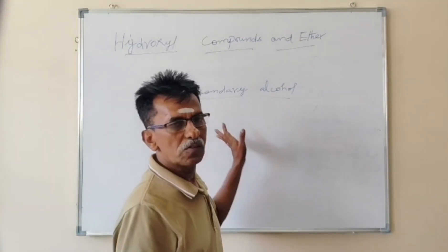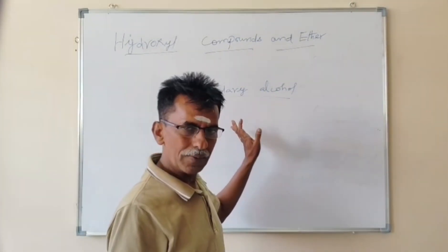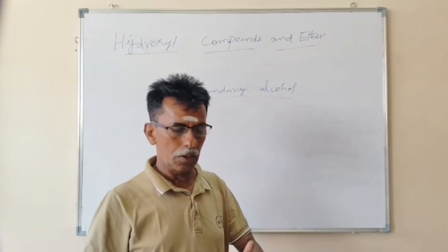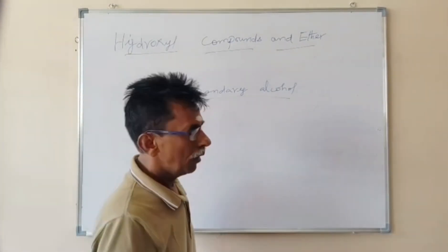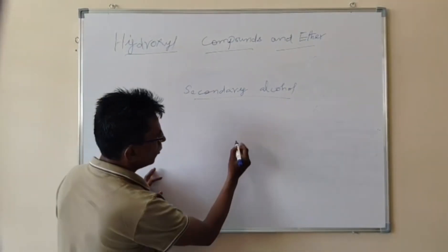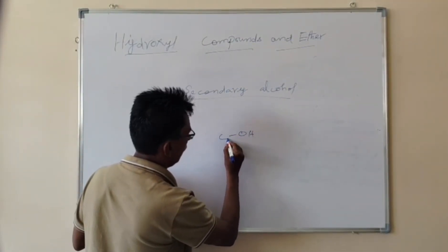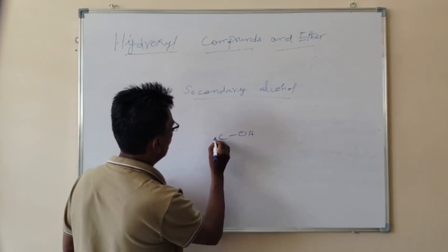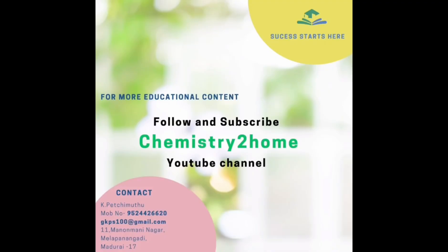Then we are going to see Secondary Alcohol. Secondary Alcohol means the OH-group-bearing carbon atom is linked with two alkyl groups — that is Secondary Alcohol.